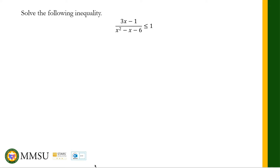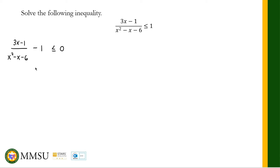Example problem number two: (3x - 1) / (x² - x - 6) ≤ 1. The right side is not zero, so we need to rewrite it. We move everything to the left: (3x - 1) / (x² - x - 6) - 1 ≤ 0. We combine using the least common denominator x² - x - 6, giving us (3x - 1 - (x² - x - 6)) / (x² - x - 6) ≤ 0.